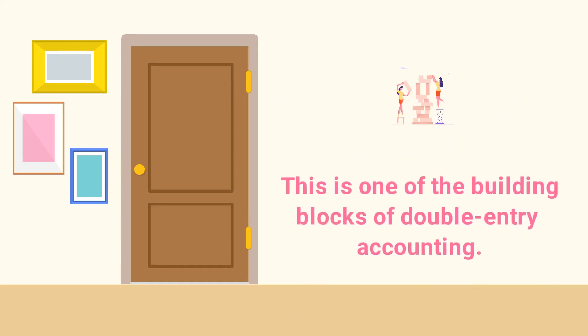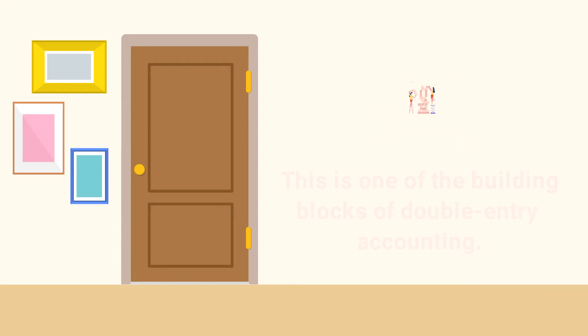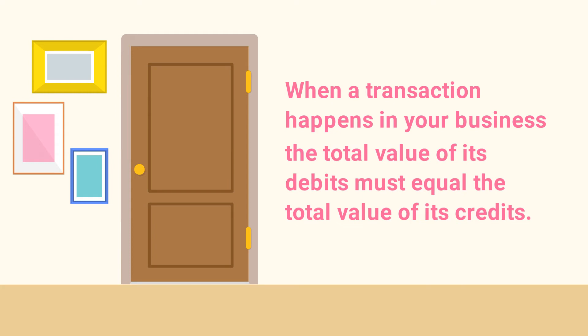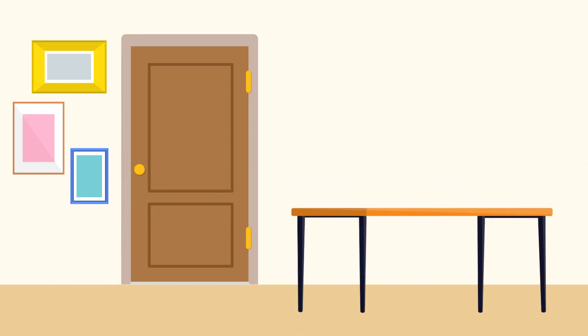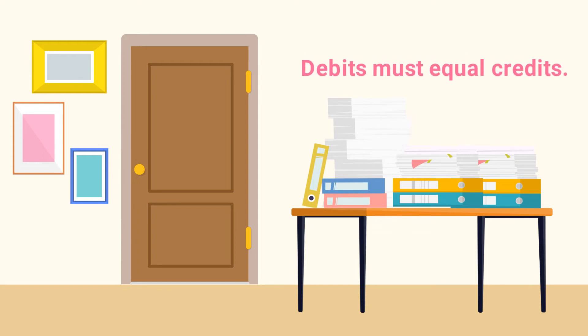This is one of the building blocks of double-entry accounting, and there's no way around it. When a transaction happens in your business, the total value of its debits must equal the total value of its credits. This rule applies to all transactions, whether they require 2, 4, 100, or any other number of entries into your set of accounts. Debits must equal credits — it's the basis of double-entry accounting.